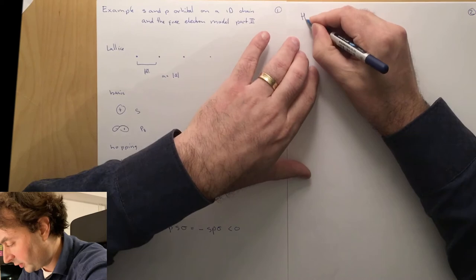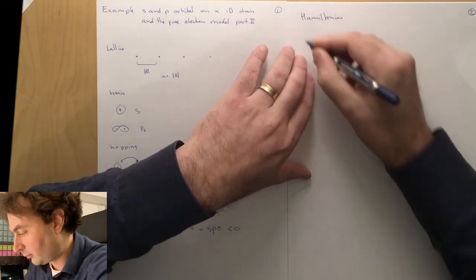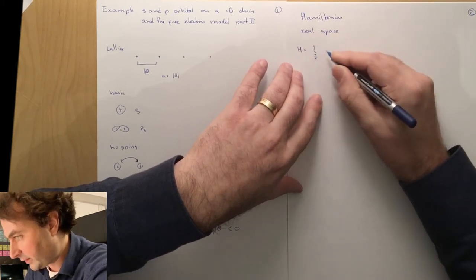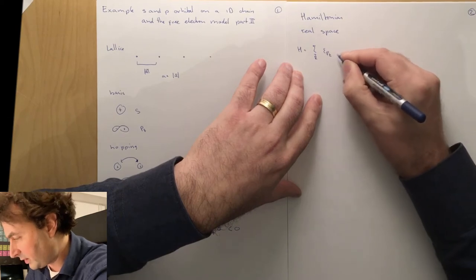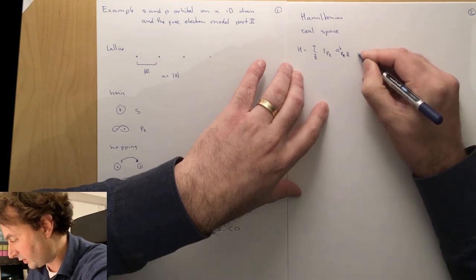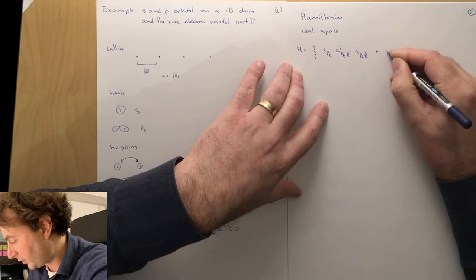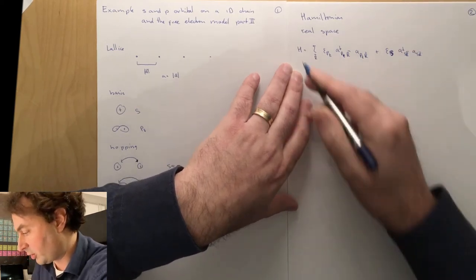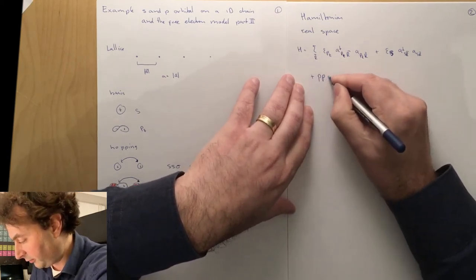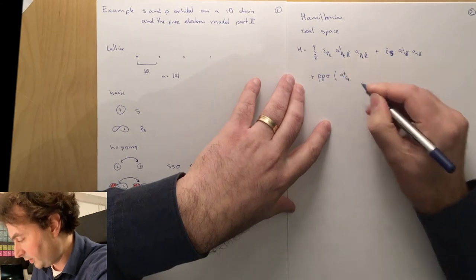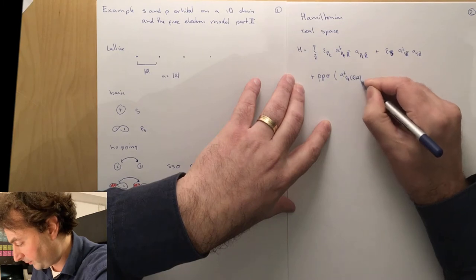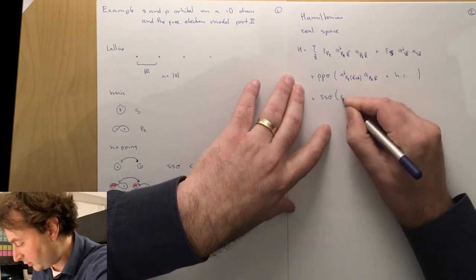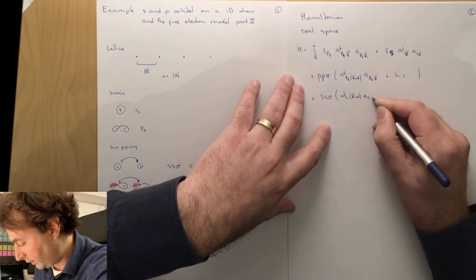Let's have a look at our Hamiltonian. First we do this in real space. Our Hamiltonian is a sum over all lattice vectors: the on-site energy for the pz orbital where we count the number of pz electrons at site r, plus the on-site energy for the s orbital where we count the number of s electrons at position r. Then we have the hopping from the p orbital: a dagger pz at r plus a, apz at r, plus the Hermitian conjugate.